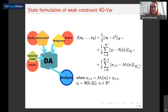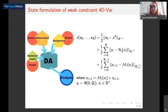We have penalties for the discrepancy between the state at the initial time and our prior estimate background. We also have observations of the dynamical system in the vector y_i, where i is the time, and the operator H maps the state variables to the observation space. For example, in numerical weather prediction, we may have observations of atmospheric radiances from satellites, but our numerical model may operate on different variables such as temperature or pressure, so we need to map the model variables to the observations. Finally, we have penalties for the model error. All terms are weighted by the inverses of the error covariance matrices: B for the background, R for the observation errors, and Q for the model errors.